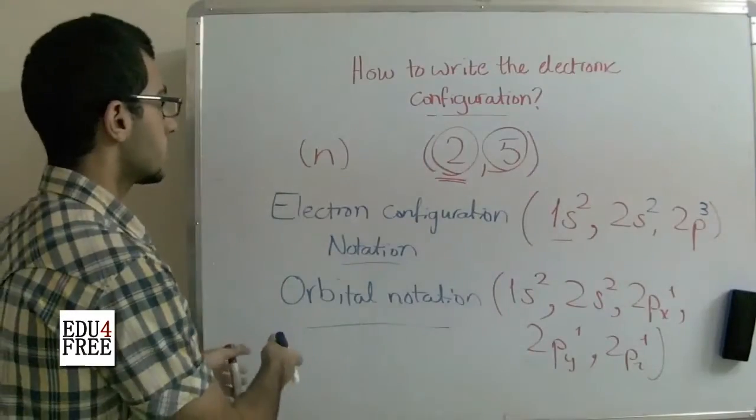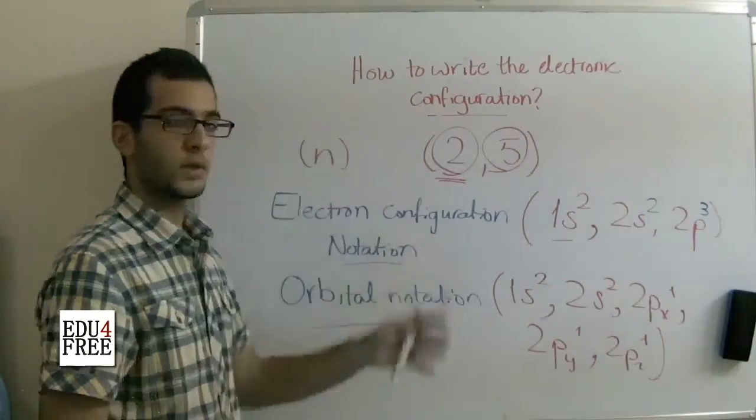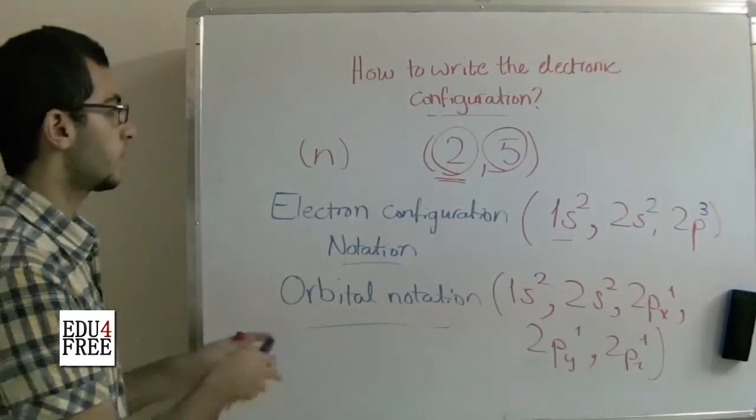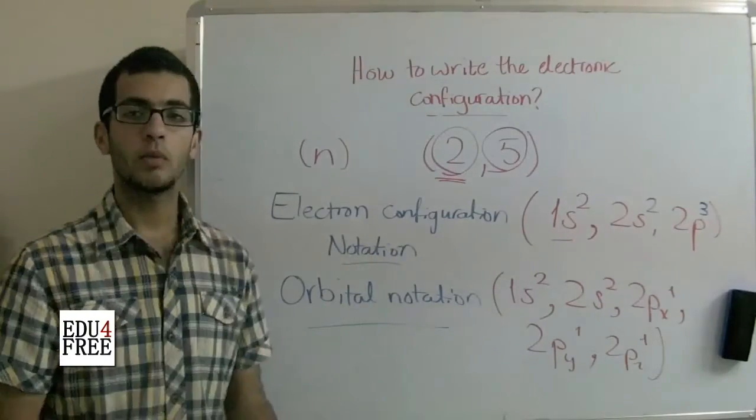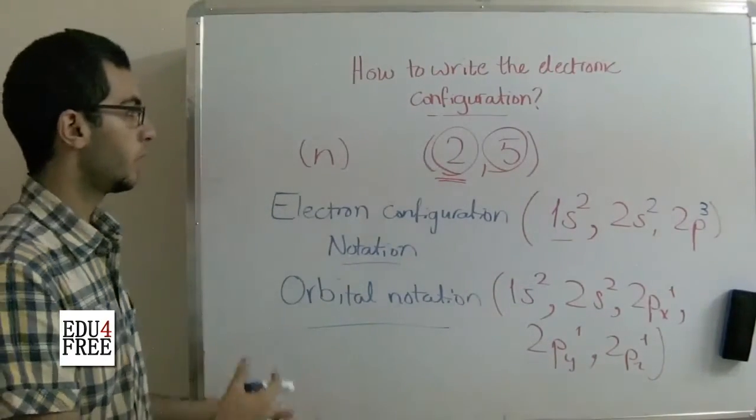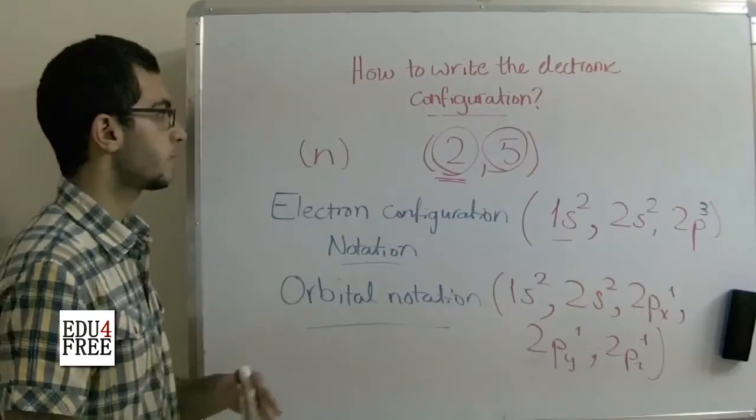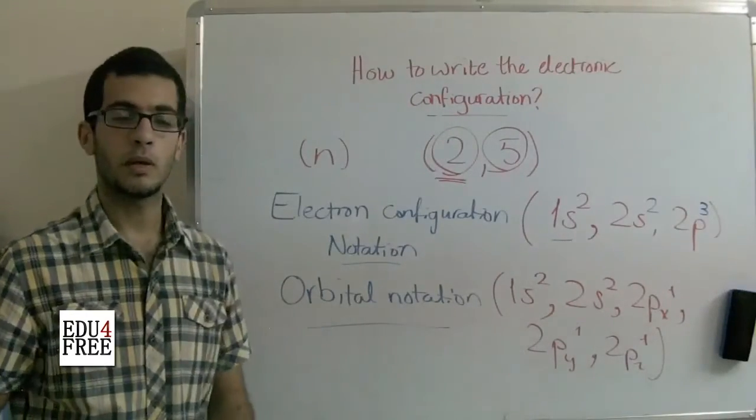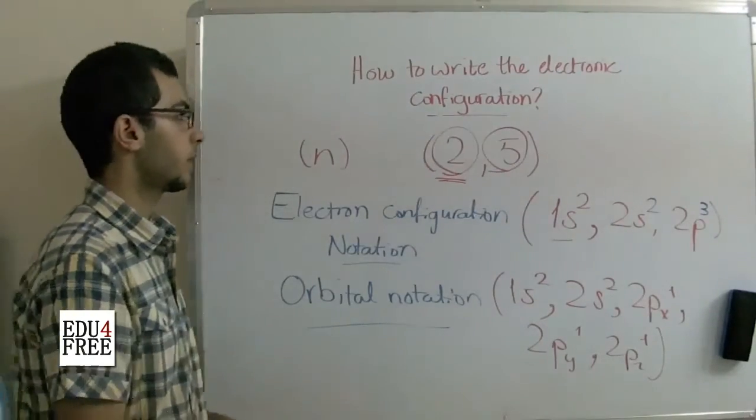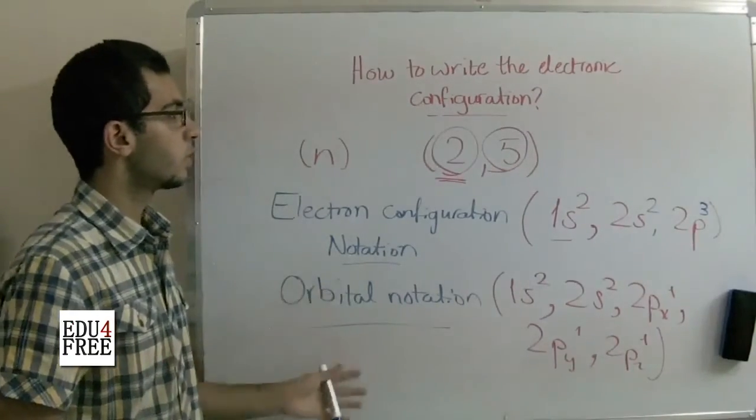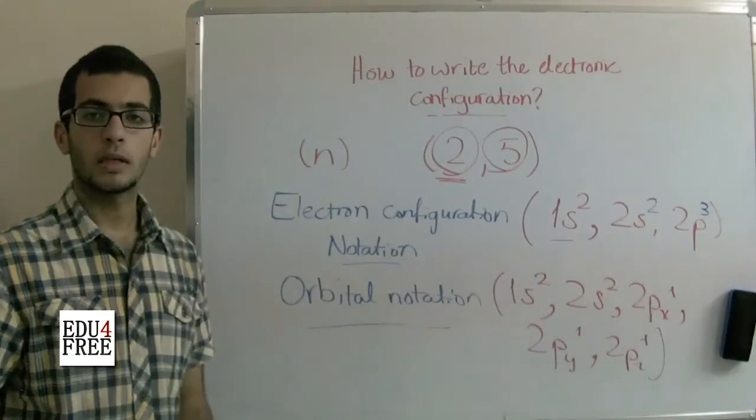These are the methods to write the electronic configuration. This is the end of Chapter 1. Next time we will talk about the periodic table and the classification of elements, including how they are classified. Thank you for watching and see you next time.